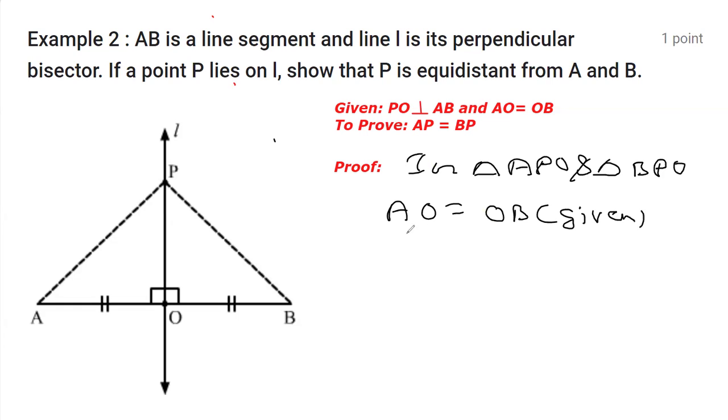Further, I can say that angle AOP is equal to angle BOP. These two angles are equal because each is 90 degrees. As you know, perpendicular makes 90 degrees on either side. Further, we have OP equals OP, and that is common.